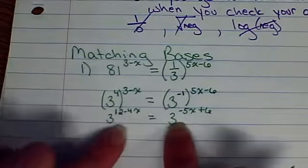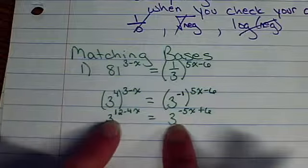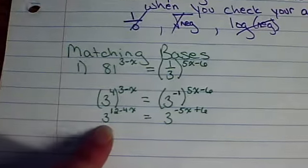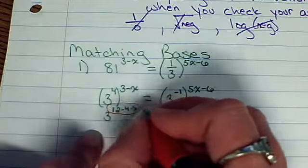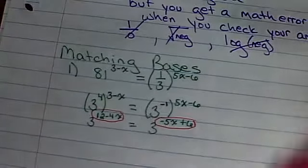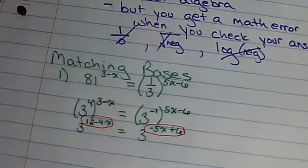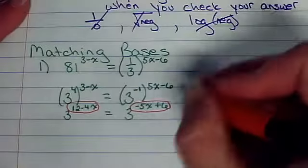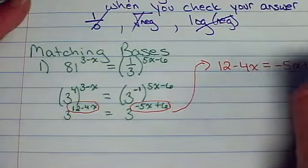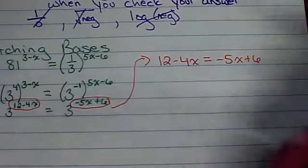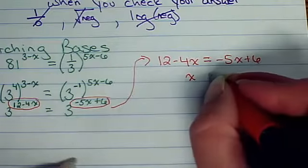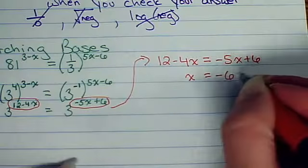Now, here's where we find that we have matching bases. If this is truly an equation, it is equal. It is in balance. If these bases are the same, then there is no other option than the fact that these exponents have to be equivalent if this truly is an equation, if it's truly balanced. So, what I usually like to do is kind of come off to the side and say, well, if that's true, then 12 minus 4x has to equal negative 5x plus 6. Right? Okay. And then we do a little bit of algebra. Add the 5x over here and we get x. Subtract the 12. 6 minus 12. That's going to give me a negative 6.